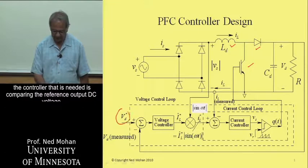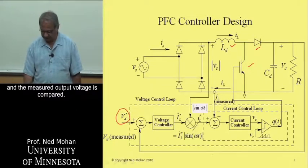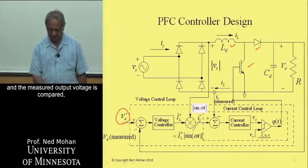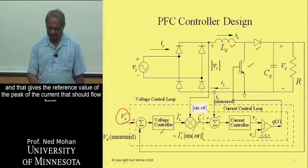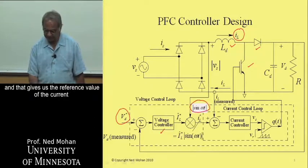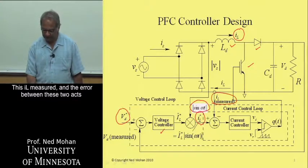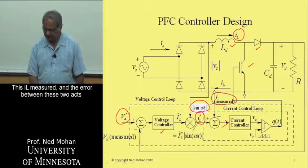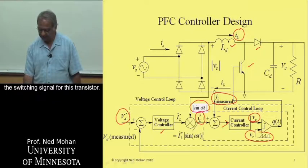The controller compares the reference output DC voltage, which is picked to be greater than the peak of the incoming AC voltage, with the measured output voltage. The difference acts on the voltage controller, giving the reference value of the peak current. We multiply this reference with the template, the absolute value of sine omega t, to get the reference inductor current. We compare it with the actual current IL measured, and the error acts on the current controller, giving the control voltage compared with the ramp signal to produce the switching signal for the transistor.